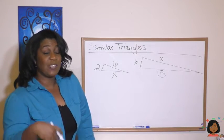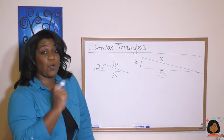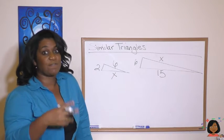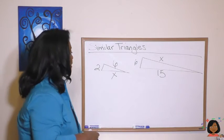Well, let's use the fact that we know that these are proportional. The corresponding sides are proportional. Let's use that fact to find some missing sides. Take a look.